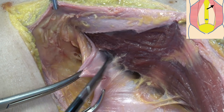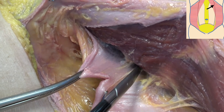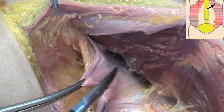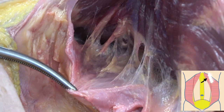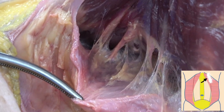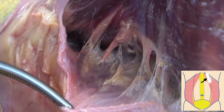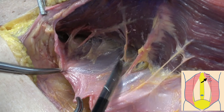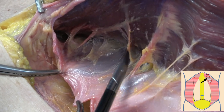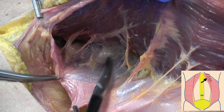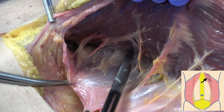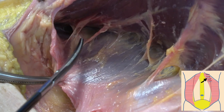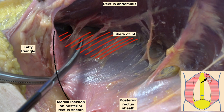Cranially, we stop the medial incision on the posterior rectus sheath about 6 cm below the xiphoid and do not dissect the retrorectus space at this area. We then identify the branches from the 7th to 9th intercostal nerves that run very medially near the transversus abdominis muscle.